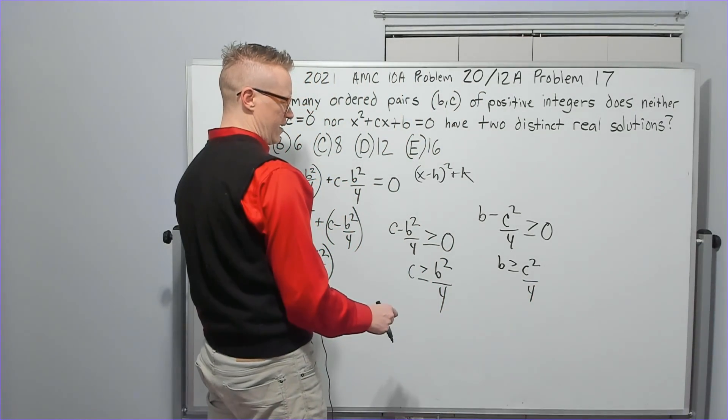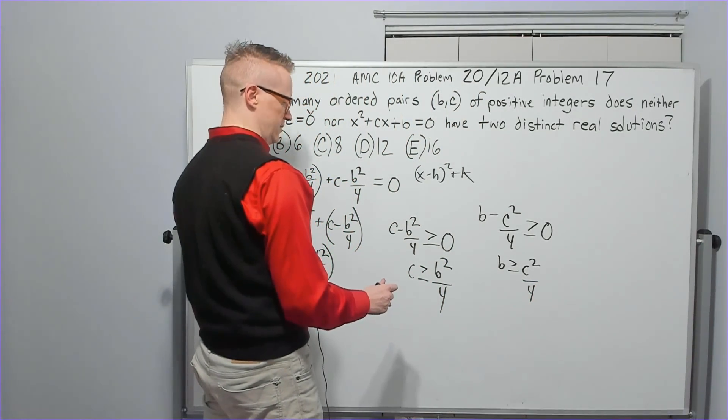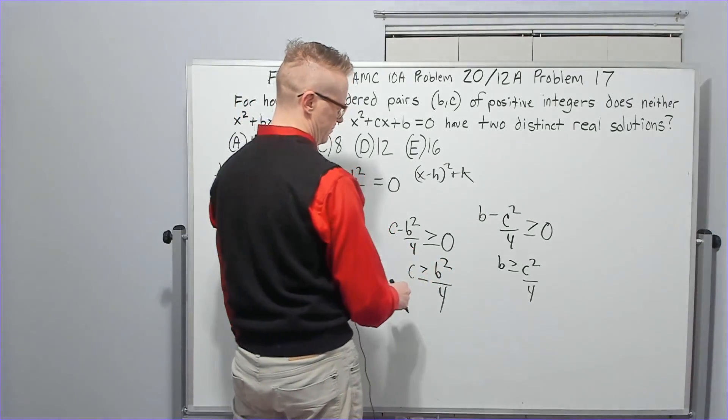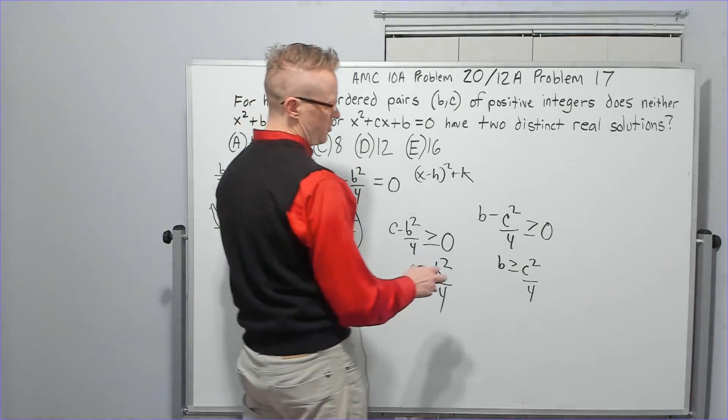I think I will plug in. If I square root that, if it was equal, I would get c squared less than or equal to 4b. Maybe I should just square this. It'll be easier.